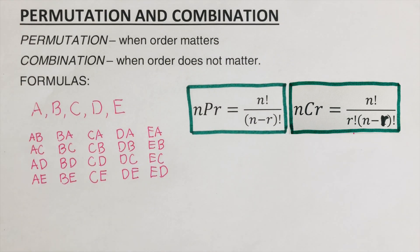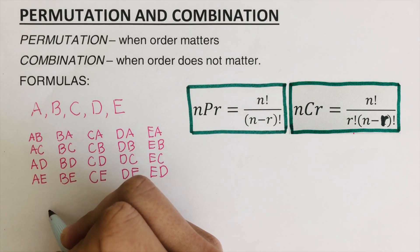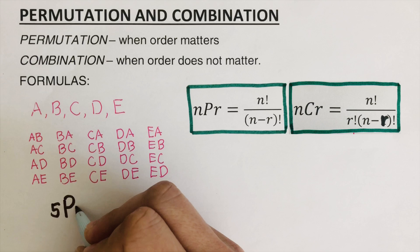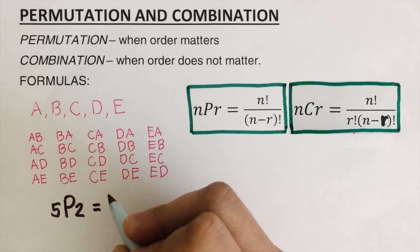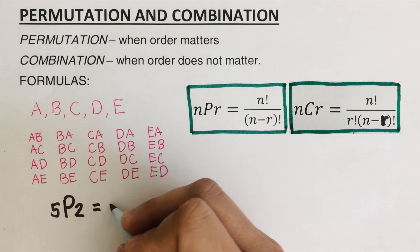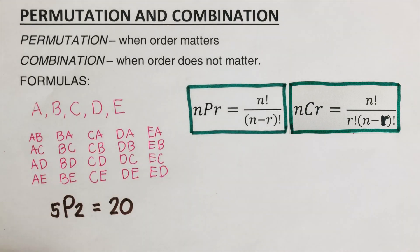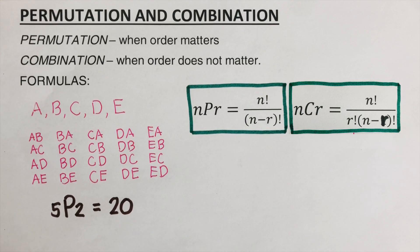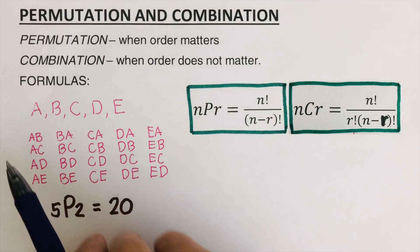If we count all of these, we get twenty ways to arrange two letters out of five. So the permutation of five letters arranged two at a time is twenty. That's what we mean by permutation — there were five letters total and we're arranging two of them at a time.